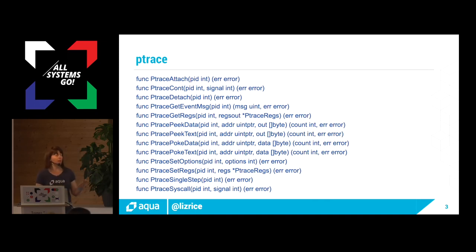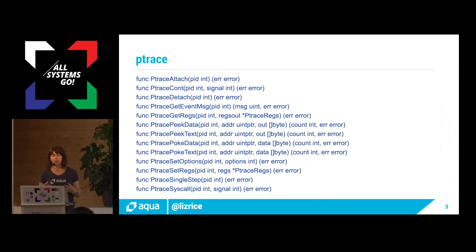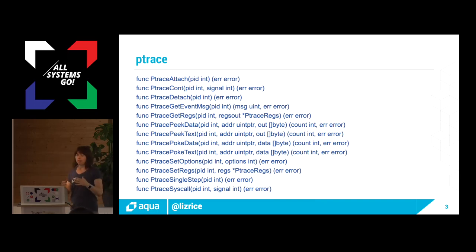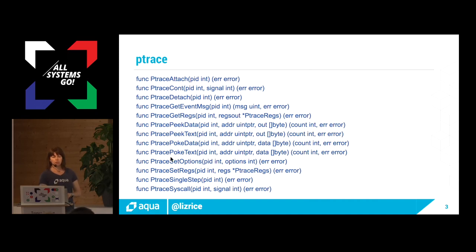I should talk about ptrace in the Go code first. I'm a Go programmer — the syscall package in Go gives us a whole set of functions that map down to this single ptrace system call, but there's actually a whole load of sub-commands. This gives us a pretty good idea of the kind of sub-commands you get from ptrace — for example, getting registers, setting registers, single step to step from one instruction to the next.